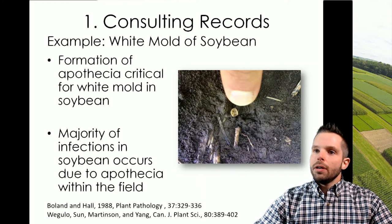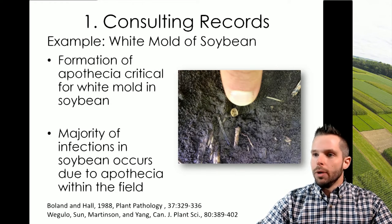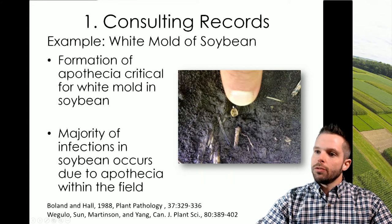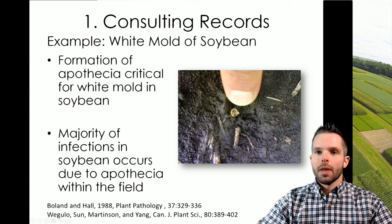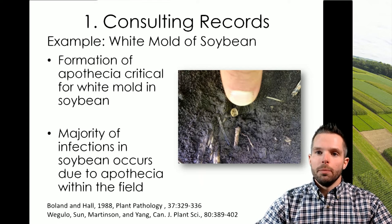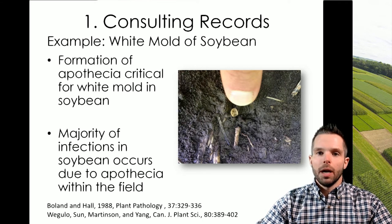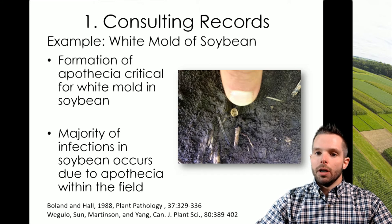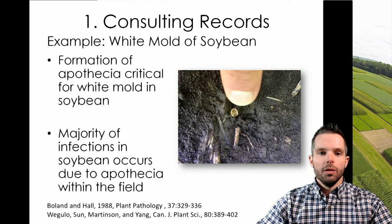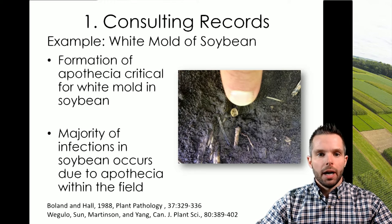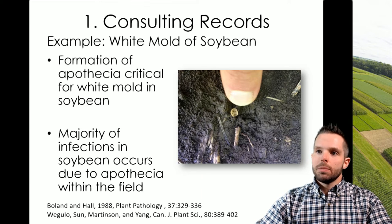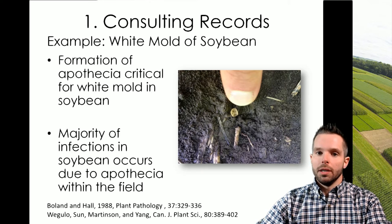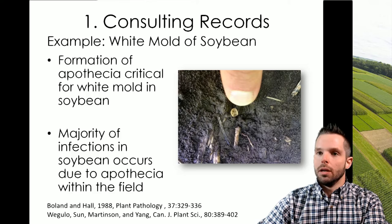Let's use an example here — white mold of soybean. White mold results from infection by spores that erupt from apothecia, these little mushroom-like structures. The formation of apothecia is critical for white mold in soybean; we have to have formation of those structures during the time soybeans bloom. The majority of infections occur due to apothecia from inside the field — where the disease happens in past years is typically where we see the higher pressure areas, making it an aggregated disease that occurs in localized areas within a particular field.